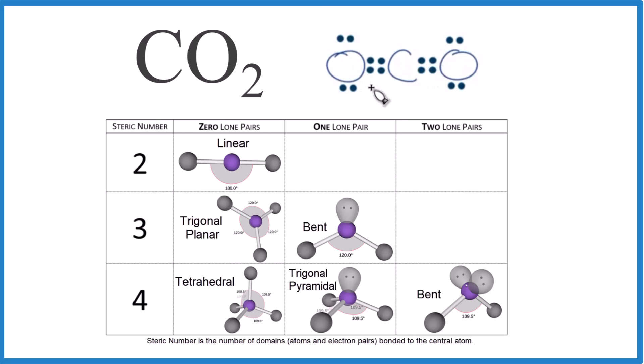So what we want to do is count the number of things bonded to our central atom. That's the carbon, that's the one that's in the center here. So we have one oxygen here and another here. And we don't have any lone pairs on this carbon.